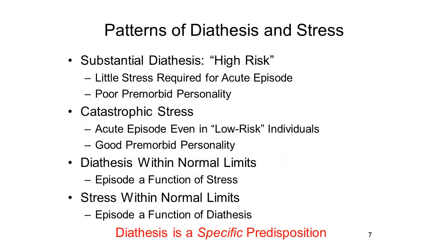The prevailing view is that the interaction between diathesis and stress is truly multiplicative, not merely additive. For individuals carrying substantial levels of diathesis, relatively little stress would be required to precipitate an acute episode of mental illness, and the individual would likely show relatively poor premorbid adjustment even before that episode. On the other hand, catastrophic levels of stress would likely produce an acute episode even in individuals who carry little or no pre-existing diathesis, and who therefore show relatively good levels of premorbid adjustment.